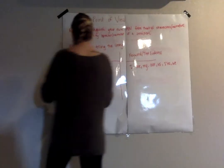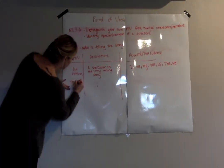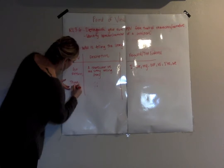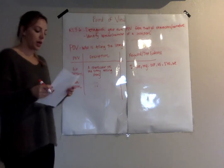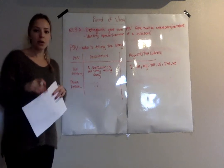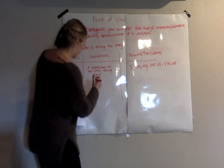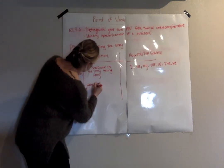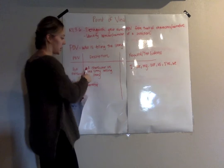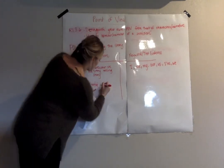The other point of view that we're going to go over today is third person. When we read a story from the third person point of view, the narrator who is telling the story is not a part of the story at all. So it's the opposite of first person, where we have a character who's in the story — the narrator is not a part of the story.